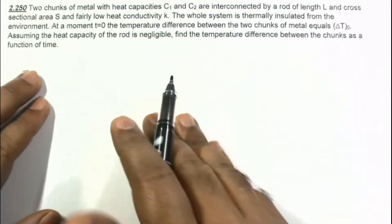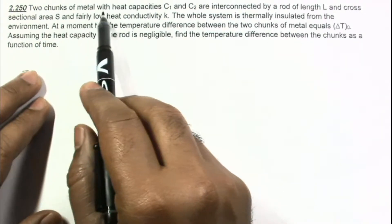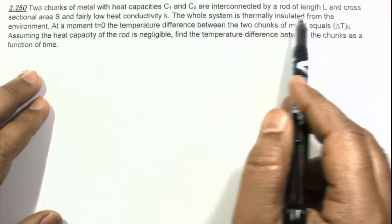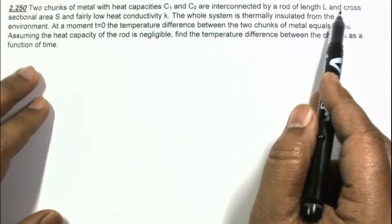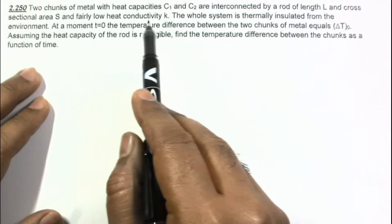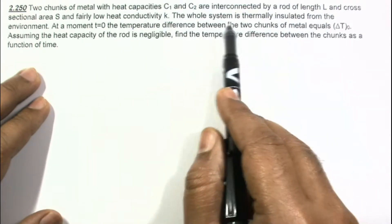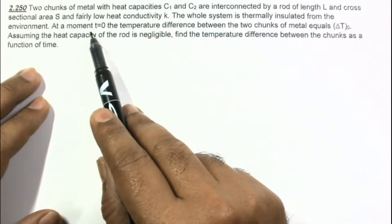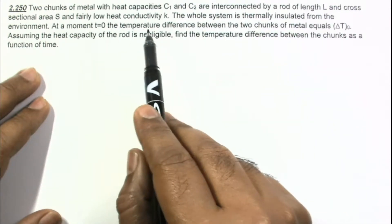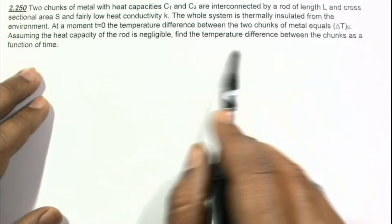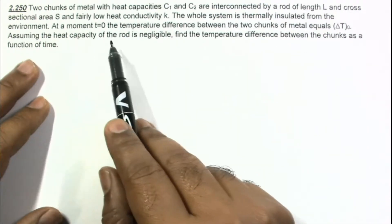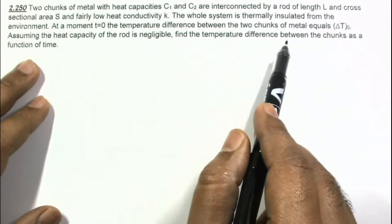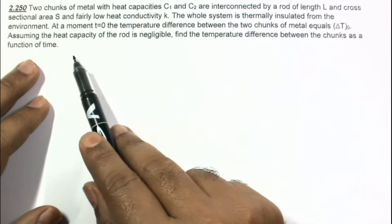Question number 2.250: Two chunks of metals with heat capacity C1 and C2 are interconnected by a rod of length L and cross-sectional area S, with fairly low heat conductivity K. The whole system is thermally insulated from the environment, and at time T equal to zero the temperature difference between the two chunks equals delta T0. Assuming the heat capacity of the rod is negligible, find the temperature difference between the chunks as a function of time.